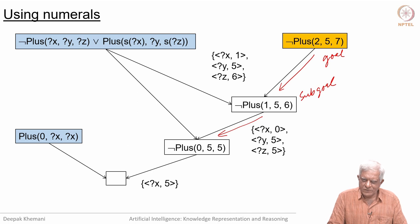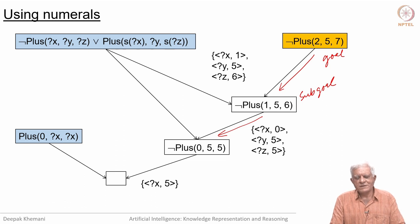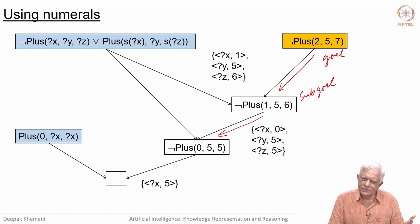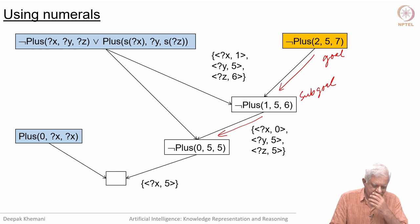Welcome back. We are looking at the exciting idea that theorem proving in logic can be used to do arithmetic. The idea that Kowalski put forward was more general than that — he said theorem proving can do any computation. Arithmetic is just one kind of computation. We saw in the last video how this is a proof of the fact that 2 plus 5 is equal to 7.